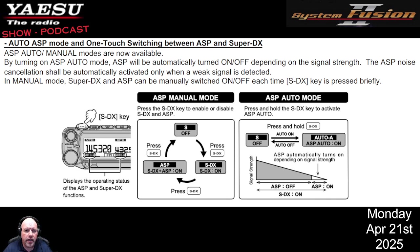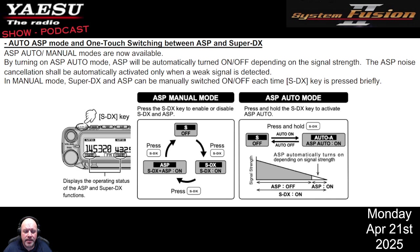With the new firmware update, you'll have two modes of the ASP functionality: manual mode and auto mode. Manual mode requires you to push the SDX button. Push it once — it goes from off to on. Push it again — it activates both SDX and ASP functionality. Push it a third time to turn it off. So: once for SDX on, once for SDX and ASP on, and a third time to turn it off.